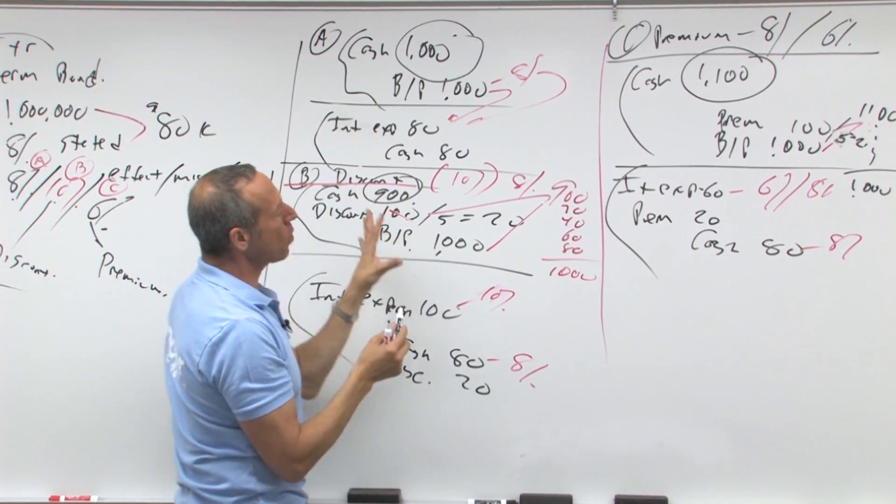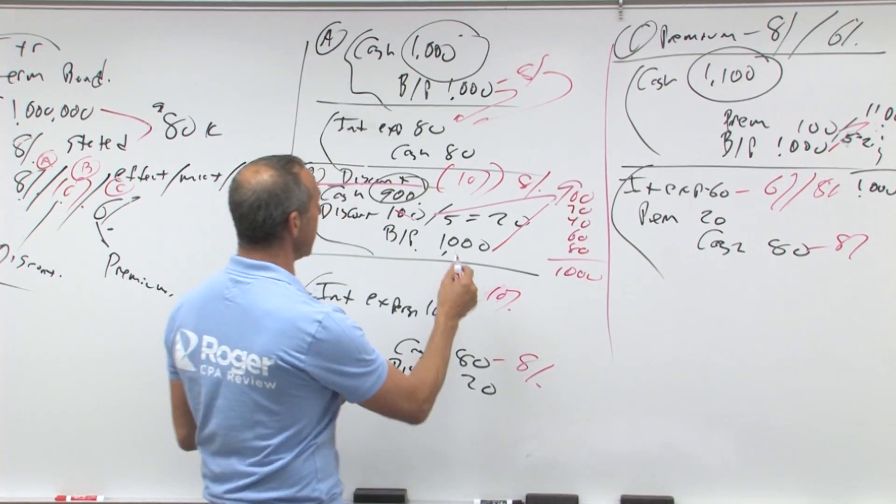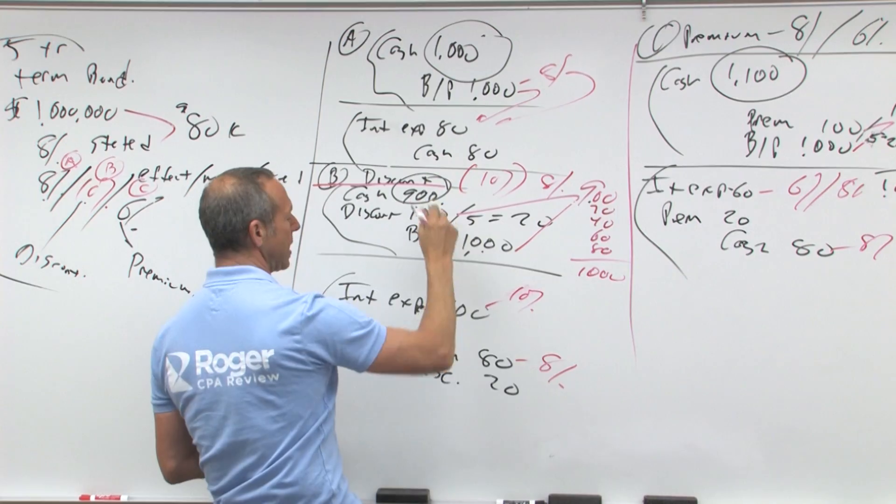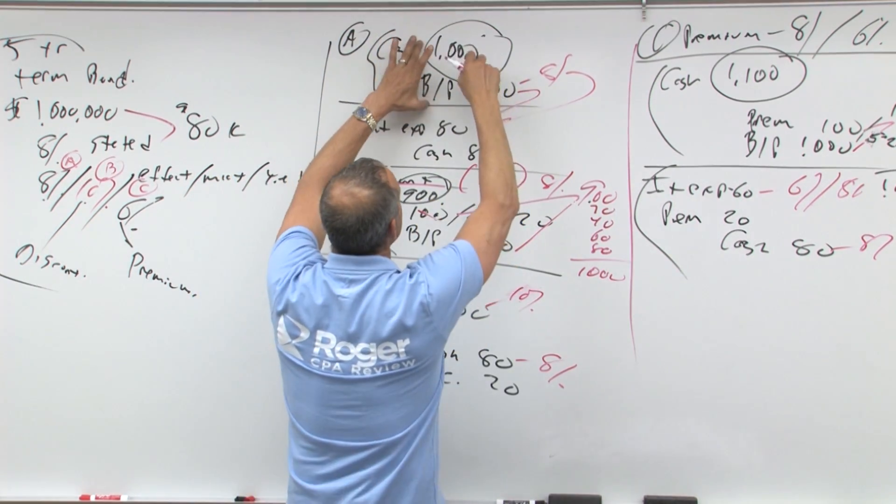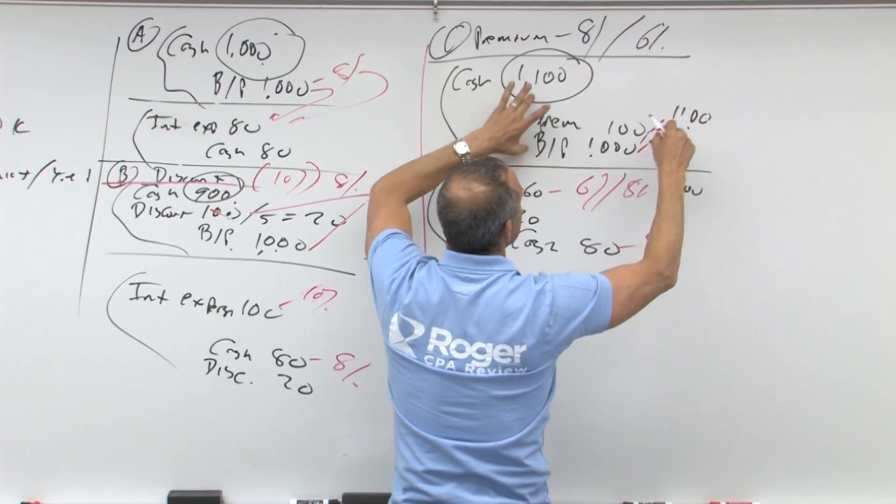Basically, we're going to try to figure out what the carrying value or the amortized cost should be. In this case, it's a thousand net of a hundred is nine hundred, which happens to be the cash. Here it happens to be a thousand. Here it happens to be a million one, which is this plus this.